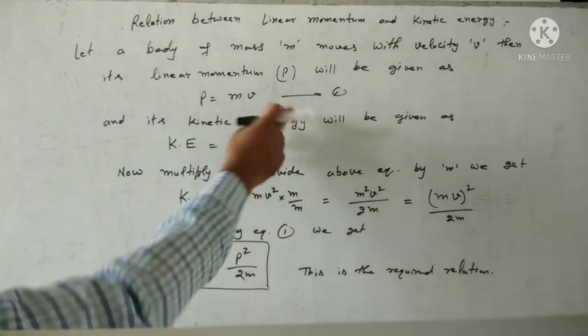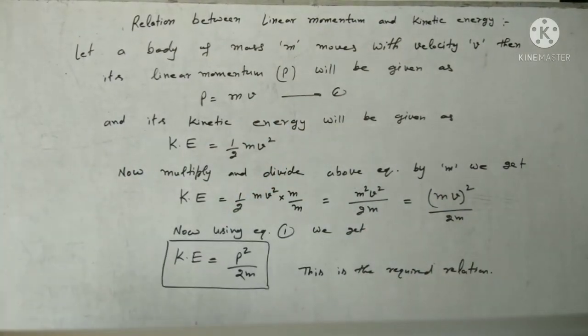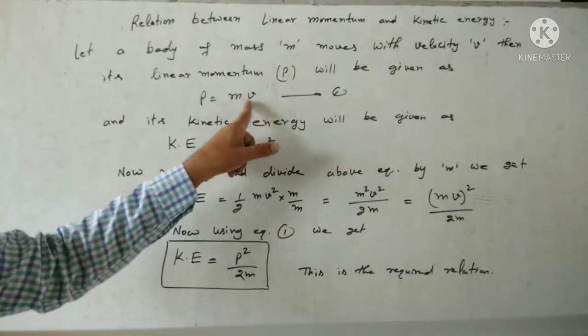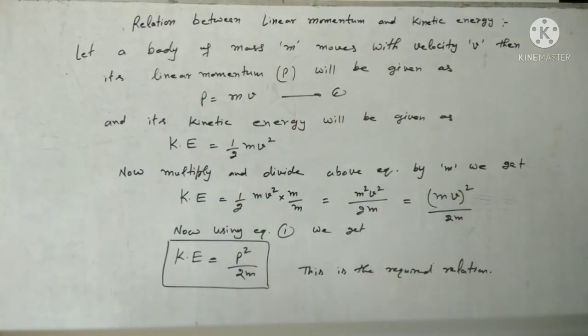Now using equation 1, MV is equal to P. So here is P and outside is square.